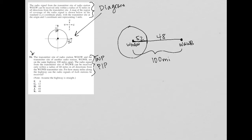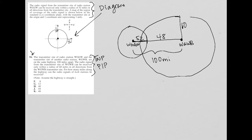Continuing to read: the radio signal from the transmitter site of WGWB can be received only within a radius of 60 miles. So that radius of 60 is going to overlap somewhat with WGGW. From the center of WGWB to the edge of WGGW's signal range is 48 miles, which means the overlap is an additional 12 miles, because 48 plus 12 is 60. So that 12-mile stretch is the overlap.